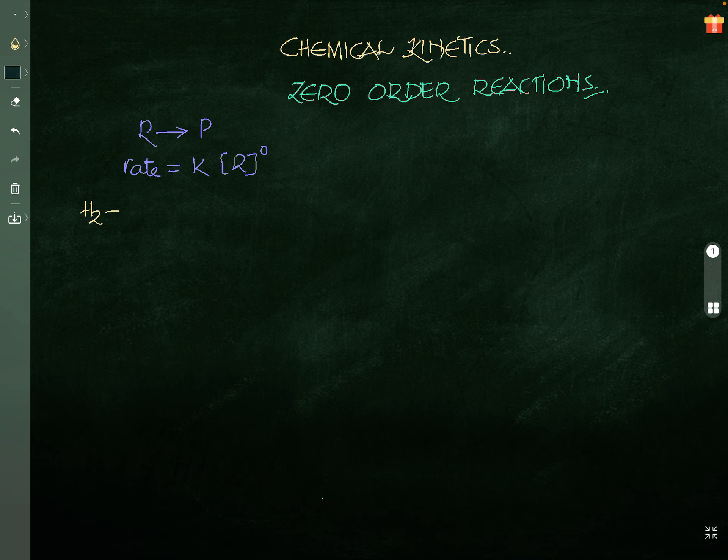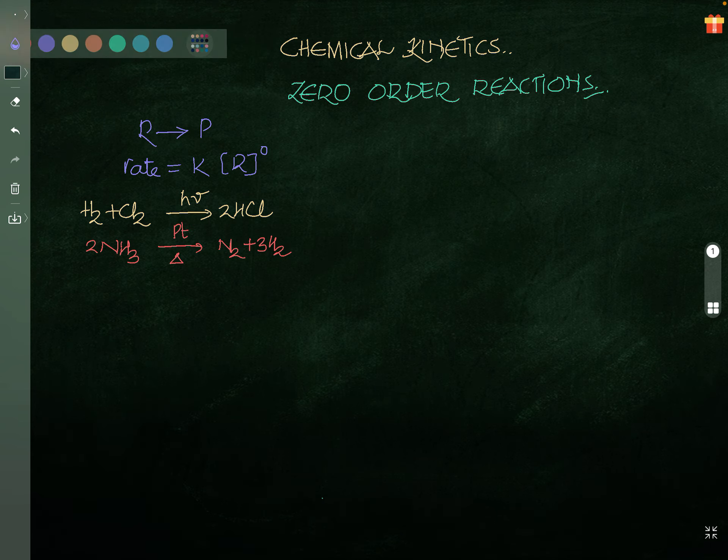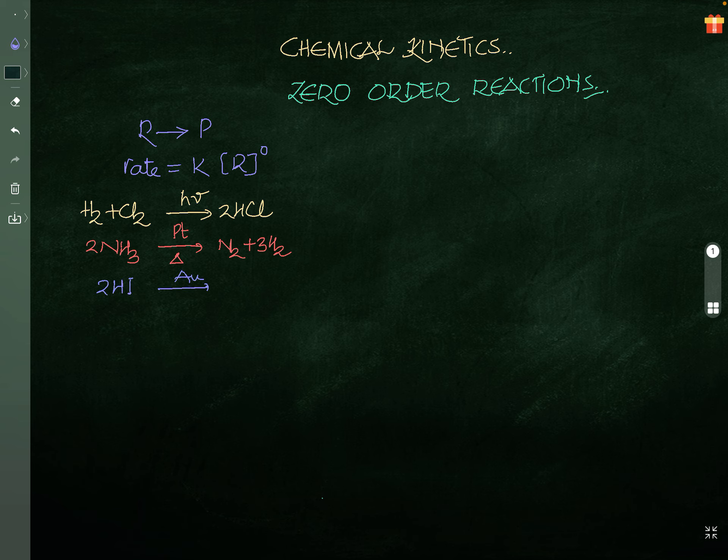Examples: H2 plus Cl2 gives rise to 2HCl in the presence of light. If you remove light, no reaction. So it is depending on light. That is why it is zero-order reaction. Otherwise, two ammonia decomposition to give you N2 and H2, decomposition on platinum surface. Or you can go for HI decomposition, 2HI decomposition, gold surface, H2 plus I2. All these you can consider as zero-order reactions.